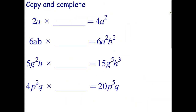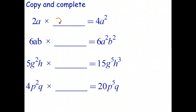One last thing to practice. We have 2a multiplied by some expression giving us 4a². Looking at numbers first: 2 times what gives 4? The answer is 2. Then a times what gives a²? The answer is a, since a×a=a².